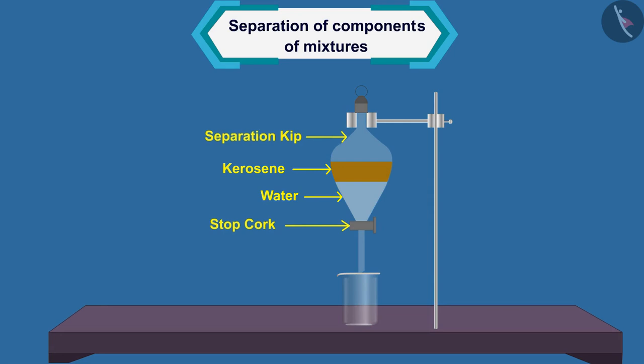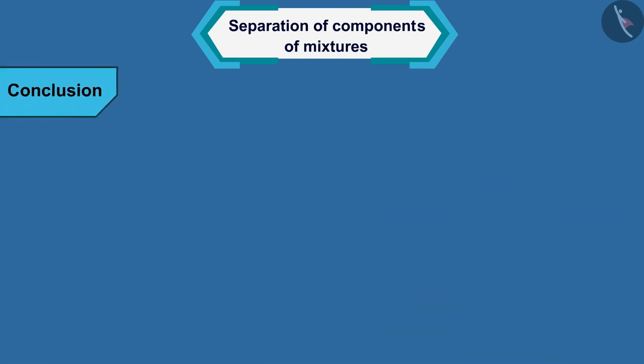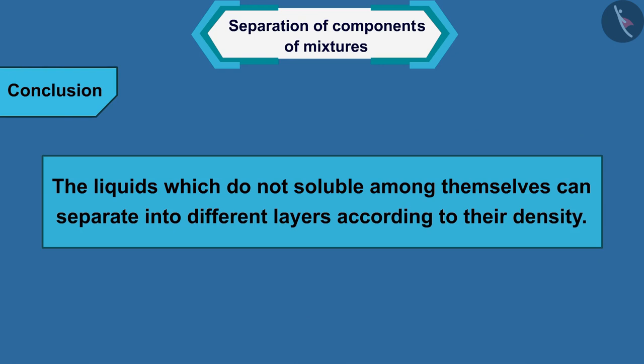Now, we can open the stop cork of separation funnel carefully and remove the bottom water layer into a beaker. Close the stop cork as soon as the oil reaches the bottom. In this way, we can see that the liquids which are not soluble among themselves can separate into different layers according to their density.